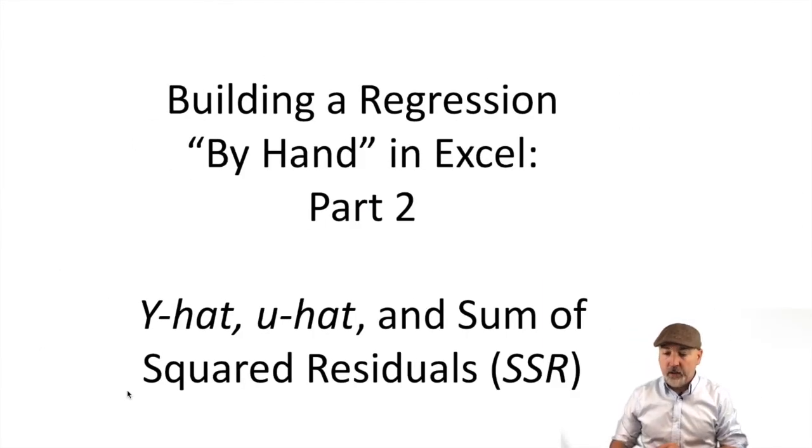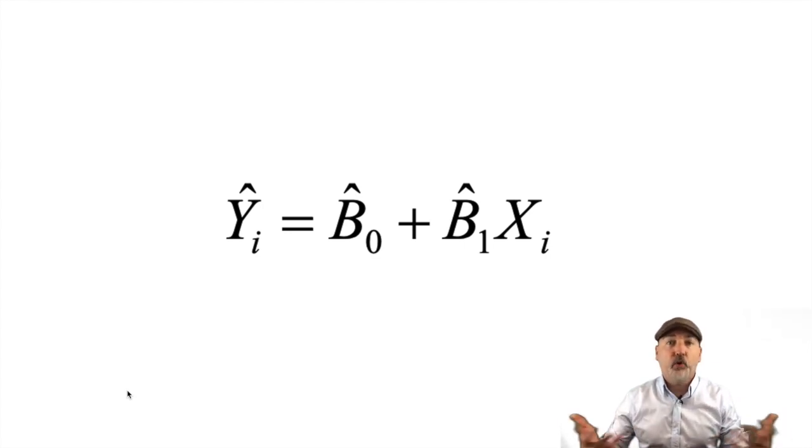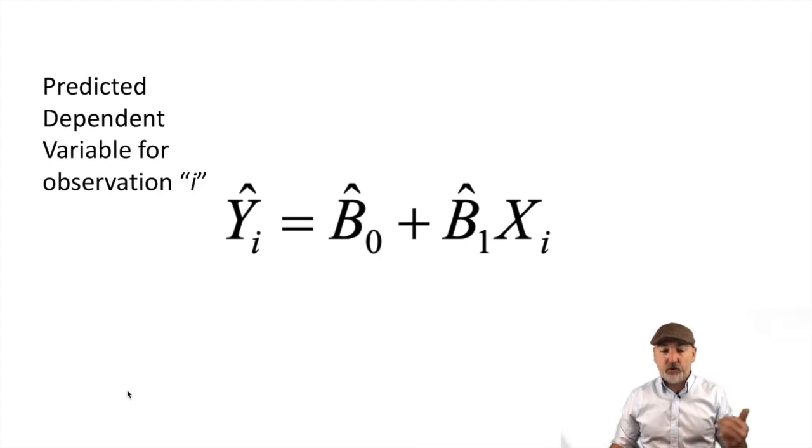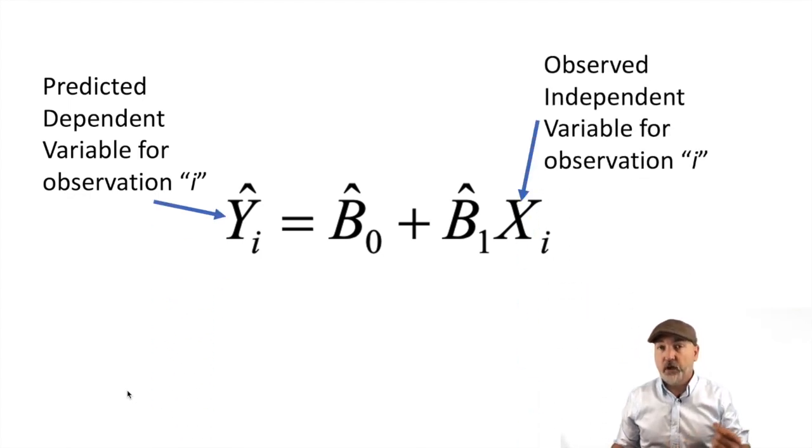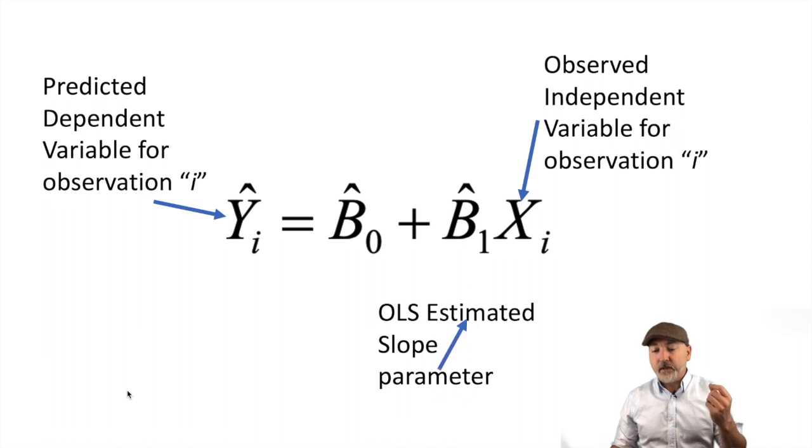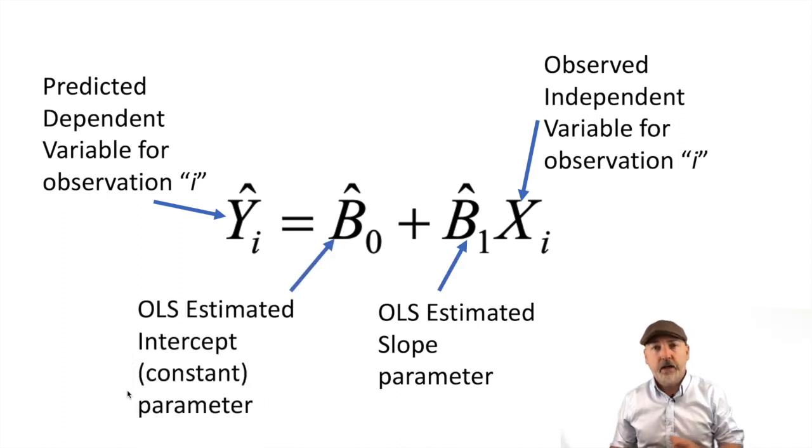To put that to use, we're going to calculate the model's prediction or the forecast, the so-called y-hat values for each of our 10 observations in our example. When we see that notation, that little hat, that always represents the sample estimated value. So we have all the ingredients now. Now we just need to do the calculation for that fitted or predicted value of y-hat.